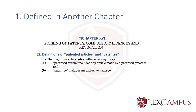However, in Chapter 16, specifically section 82, there is a new set of definitions of 'patented article' and 'patentee.' In section 82(b), patentee includes an exclusive licensee. So section 2's general definitions give way when the context requires otherwise. The definition of patentee in section 2(1)(p) and exclusive licensee in section 2(1)(f) take a different meaning in Chapter 16 on compulsory licenses. This is the first type of classification — defined in another chapter.